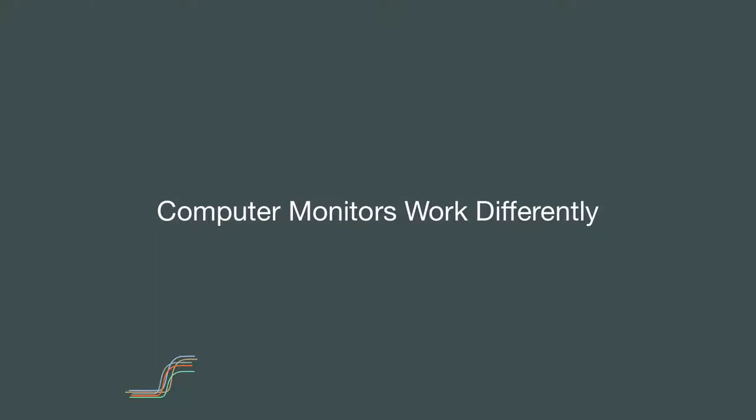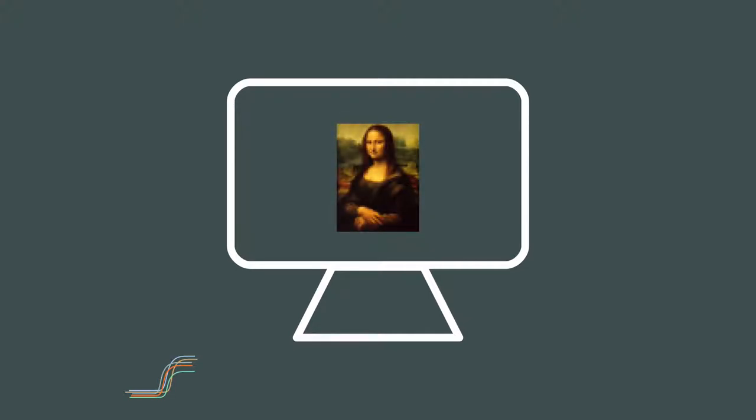Computer monitors work differently. If we look closely at a monitor displaying an image like the Mona Lisa, we would see that the image is rendered as a two-dimensional grid of single-color squares — each called a picture element or pixel. If we look even closer at a pixel, we see it is actually a combination of three lights in the colors red, green, and blue. Most computer monitors use combinations of red, green, and blue lights to generate colors.